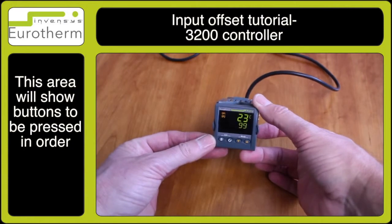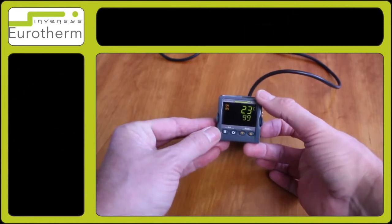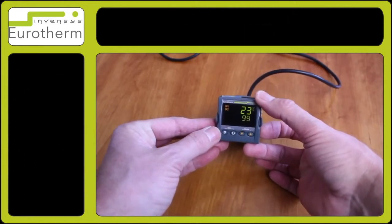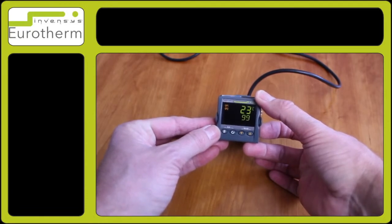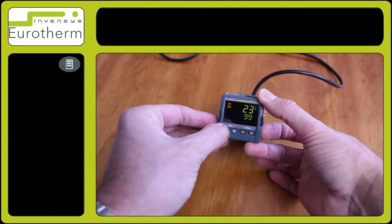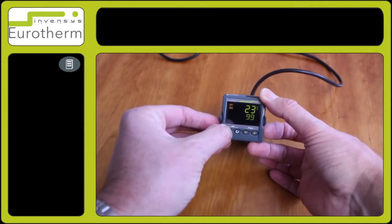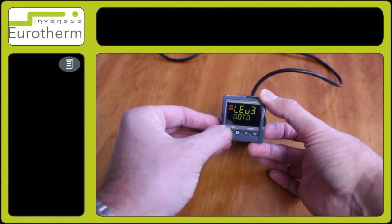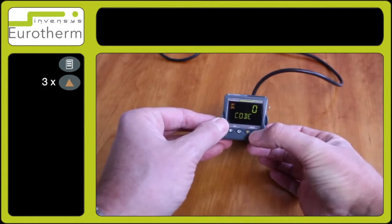3200 input offset adjustment. When you require to place an offset onto the instrument, you will need to go to level 3. Press and hold the page key until level 3 appears, release the page key, and enter number 3.